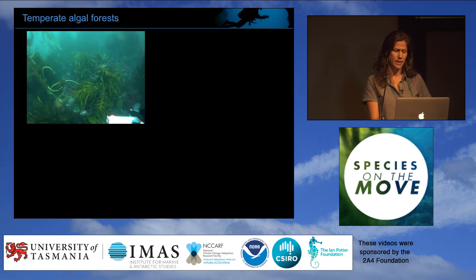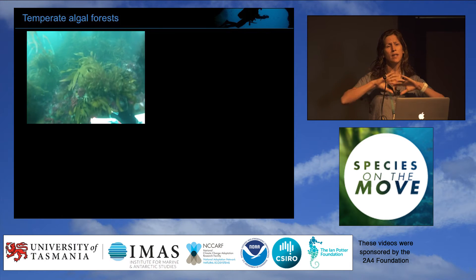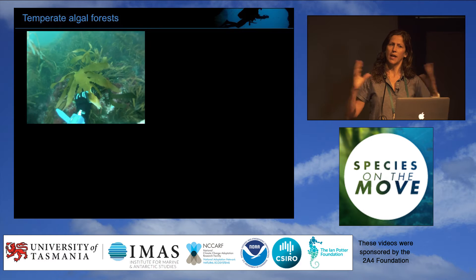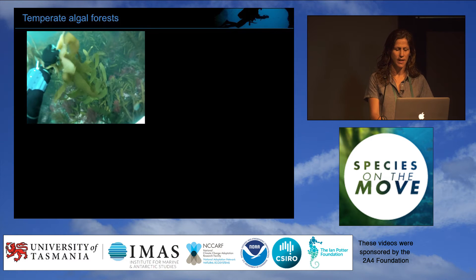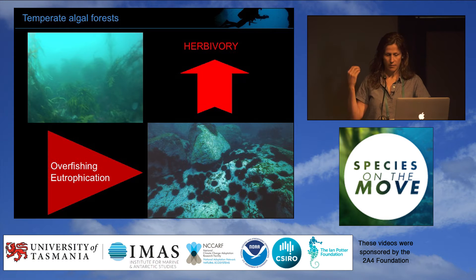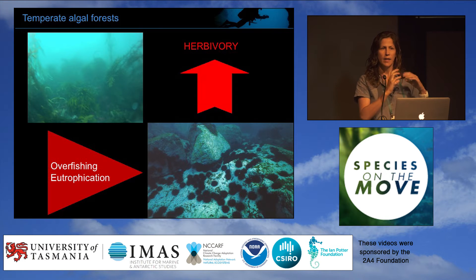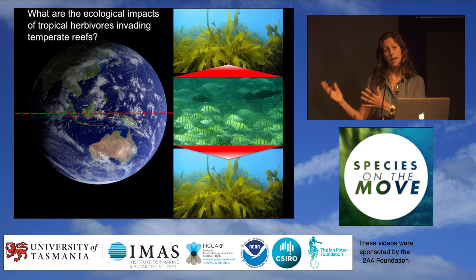In temperate systems it's actually the opposite. The main habitat-forming organisms here are the kelps, which provide habitat for hundreds of species. The problem here is that when herbivory increases — for example through overfishing of top predators — the system shifts from structurally complex, very diverse and productive kelp forests to what are called urchin barrens, dominated by urchins.